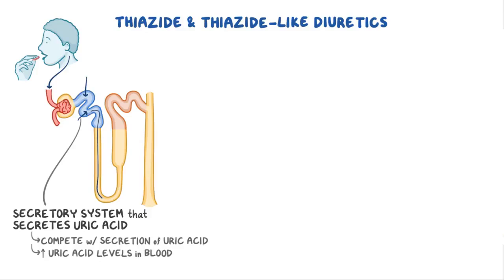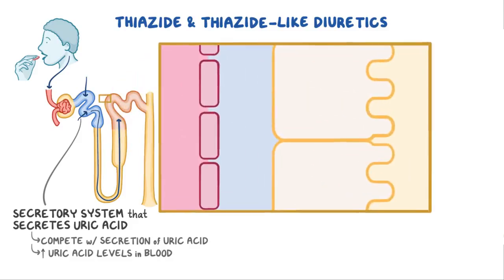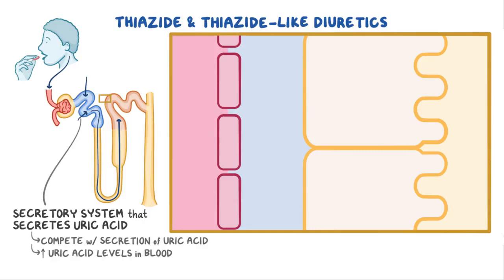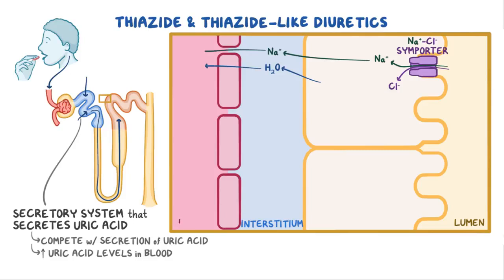They travel along the filtrate until they reach the distal convoluted tubule. This part of the nephron is lined by epithelial cells. On the luminal side of these cells there's a sodium chloride symporter, which reabsorbs one sodium and one chloride ion together from the tubule into the cell. Sodium is then reabsorbed along with water into the interstitium and into the bloodstream. This cell also has a calcium channel on its luminal side, which allows calcium from the lumen to diffuse into the cell.